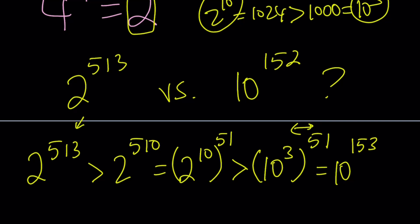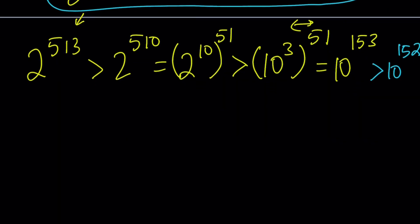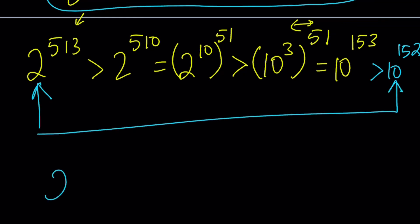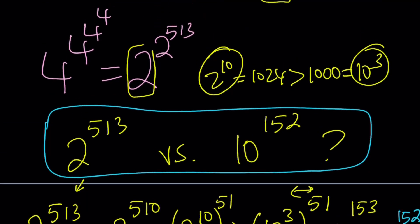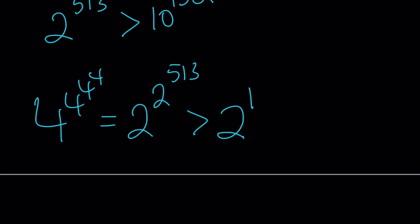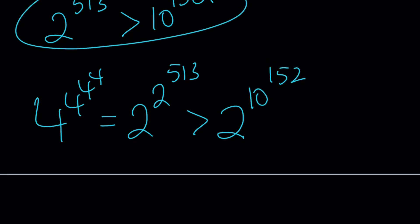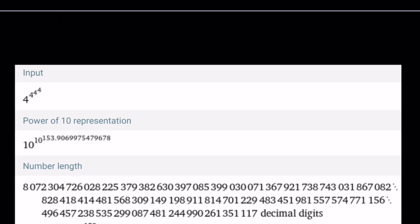Connecting the first and last steps of this chain: 2 to the power 513 is greater than 10 to the power 152. That's exactly what we were trying to compare. So 4 to the power 4 to the power 4 to the power 4, which equals 2 to the power 2 to the power 513, is greater than 2 to the power 10 to the power 51. That brings us to the end of the solution — but wait, let me show you the Wolfram Alpha screenshots of these beautiful numbers.